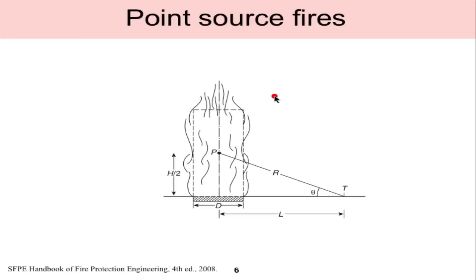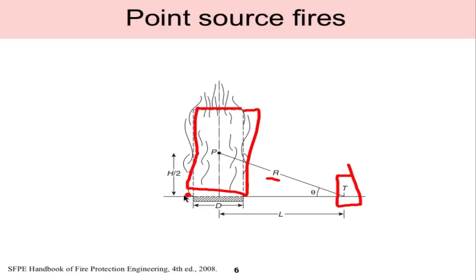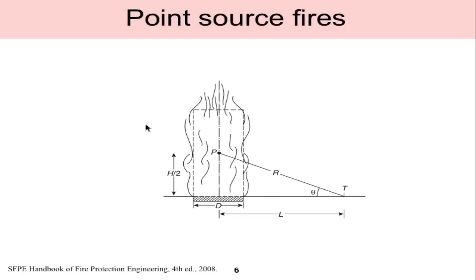I'd like to start by differentiating between different types of fire approximations. The simplest case is where we have some finite volume or size of a flame, but because our target is far enough away — some distance r — typically quantified by the diameter. It's said that about four or five diameters away from the fire, we can actually assume that the energy source is a point source located in the center of the flame, and this helps simplify the problem greatly. As we get closer to the flame — so if we have a beam or structural member that's closer to the flame — then we actually have to approximate the flame as a finite volume.